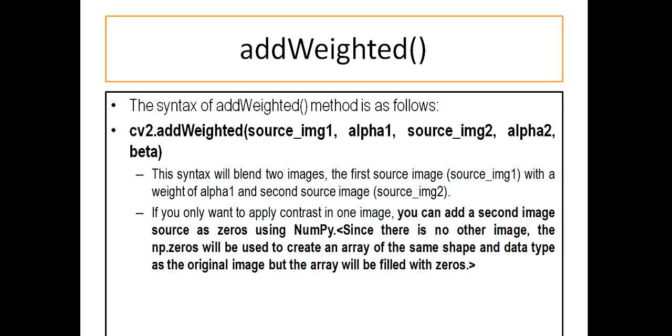Now this syntax will blend two images. Do note it will blend two images: the first source image with a weight of alpha1 and the second source image. If you only want to apply contrast to one image, then you can add a second image source as zeros using numpy. I told you how to create a matrix using zeros with the help of numpy. In this case, the np.zeros will be used to create an array of the same shape and data type as the original image, but the array will be filled only with zeros.